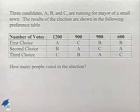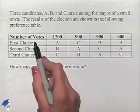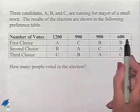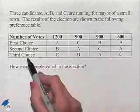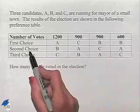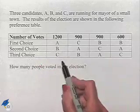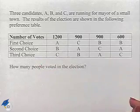We notice that we have the number of votes across the top row. We have our first choice, second choice, and third choice given in the columns.